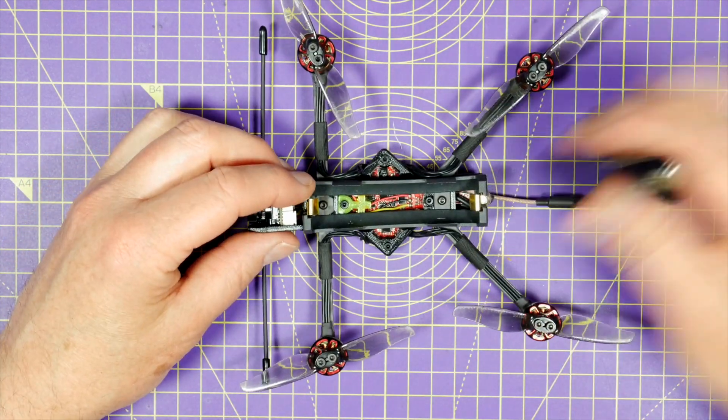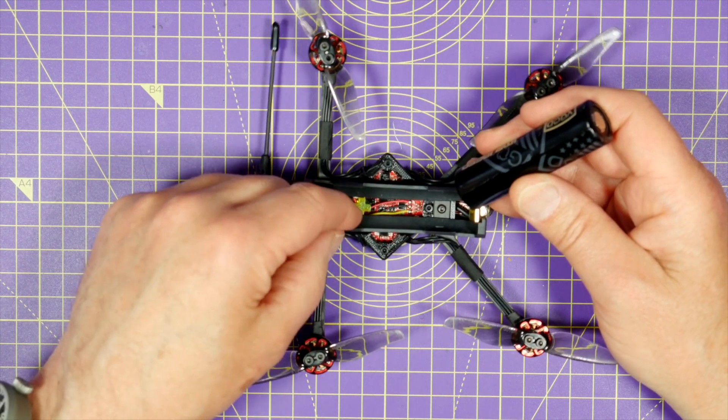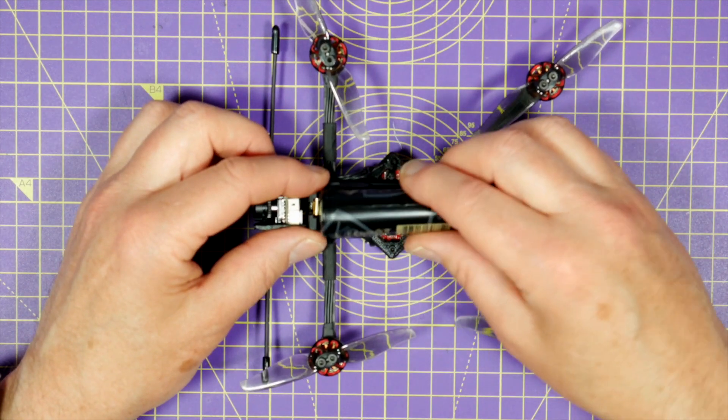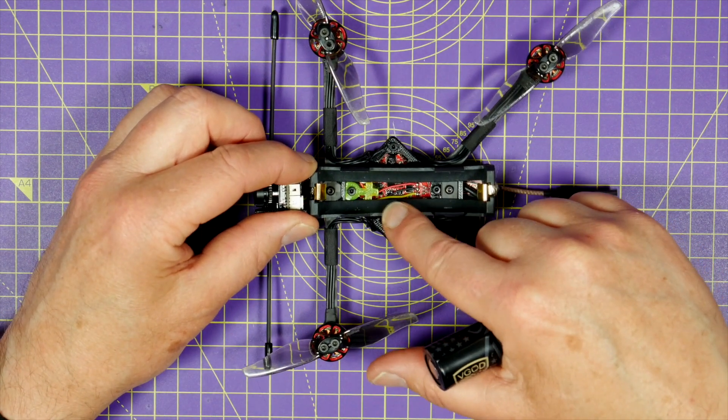Do make sure that you plug this battery in the right way around. There's a little 3D printed plus on that side. If you get it wrong, there's no reverse polarity protection on this board, and it'll fry the flight stack.